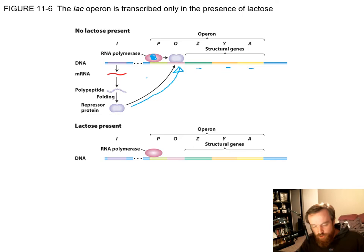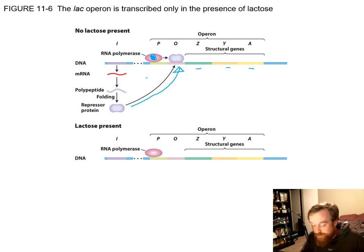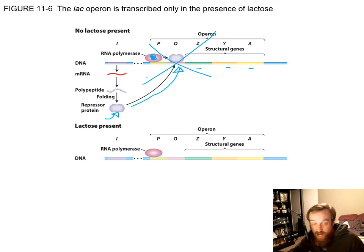This makes sense biologically: if you're an organism with genes to turn lactose into fuel, and there's no lactose present, you'd just be wasting energy making those products. What's the point of having beta-galactosidase and permease for lactose metabolism if there's no lactose around? So there's this regulatory element that says: the repressor checks the environment, sees there's no lactose, and completely turns off the lac operon because we don't need it at the time.